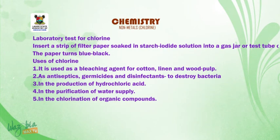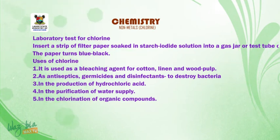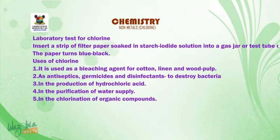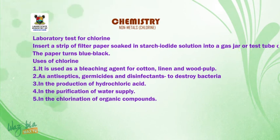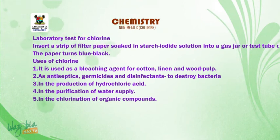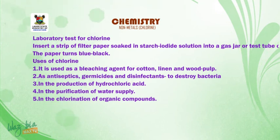Laboratory test for chlorine: insert a strip of filter paper soaked in starch-iodide solution into a gas jar or test tube of chlorine — the paper turns blue-black. Uses of chlorine: 1. It is used as a bleaching agent for cotton, linen and wood pulp. 2. It is used as antiseptics, germicides and disinfectants to destroy bacteria. 3. It is used in the production of hydrochloric acid. 4. In the purification of water supply. 5. In the chlorination of organic compounds.